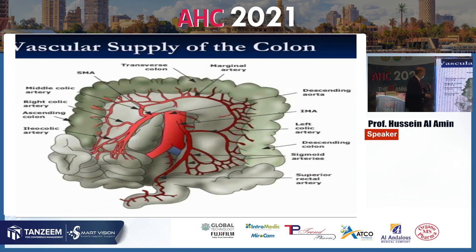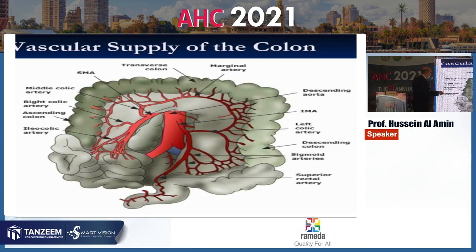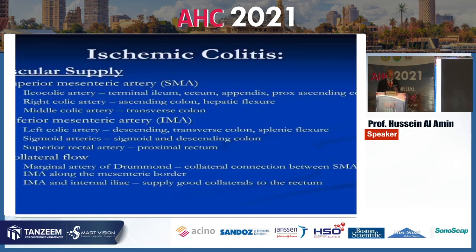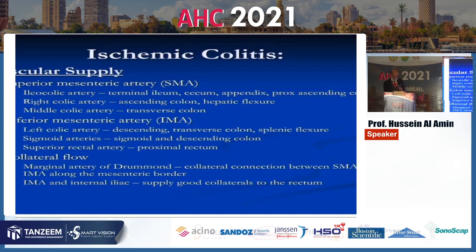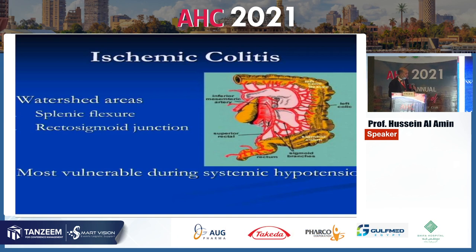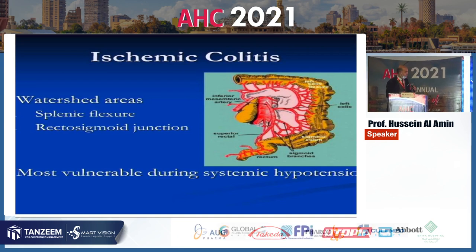The marginal artery of Drummond connects the inferior mesenteric artery and the superior mesenteric artery, forming anastomotic arcades, and is one of the most important protective factors for the colon against ischemic attacks. The splenic flexure and the rectosigmoid junction are the most vulnerable parts of the colon to be affected by ischemic attacks.